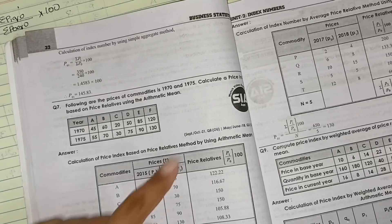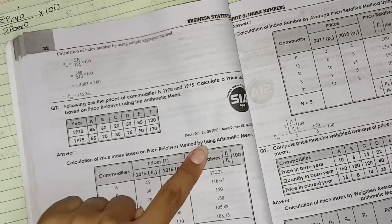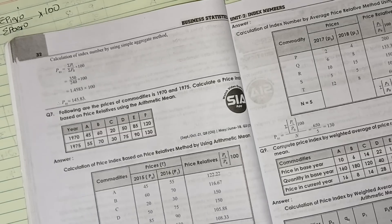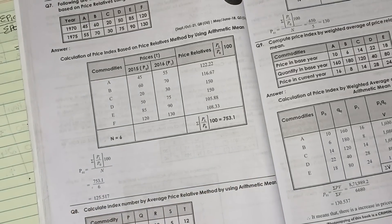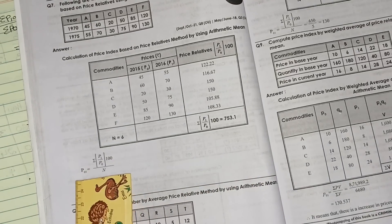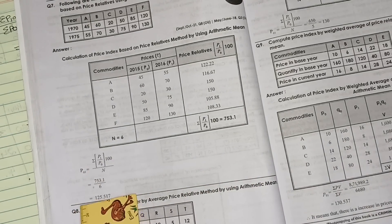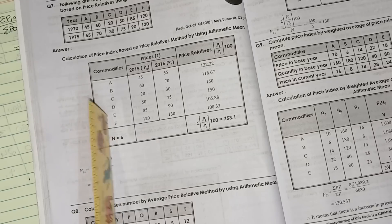After getting all this, you need to total up this value. 753.1 you need to convert it into the formula. So 753.1 divided by 6. 6 is nothing but number of observations: 1, 2, 3, 4, 5, 6. Like that you need to do.